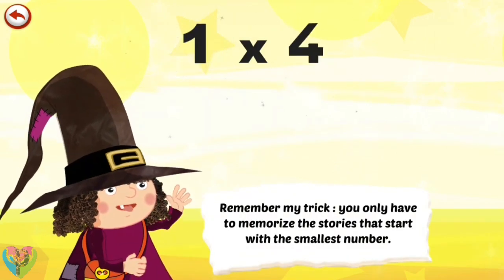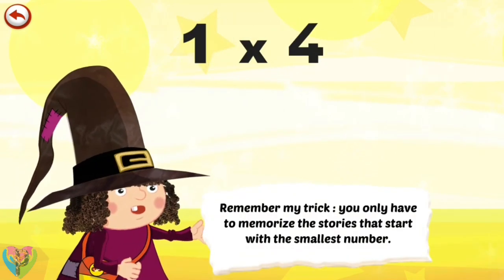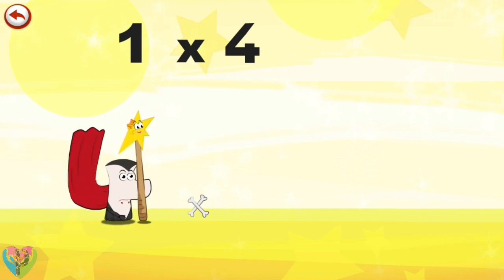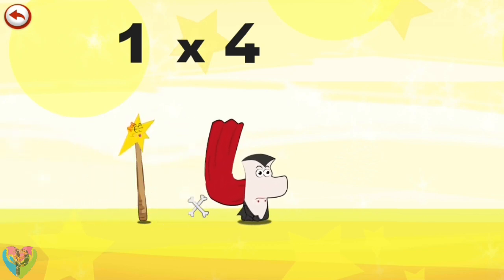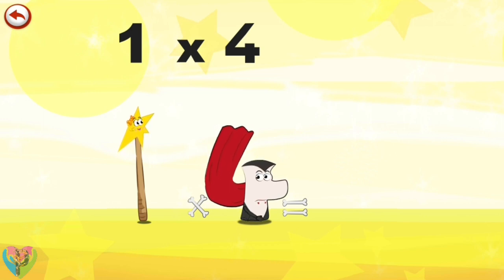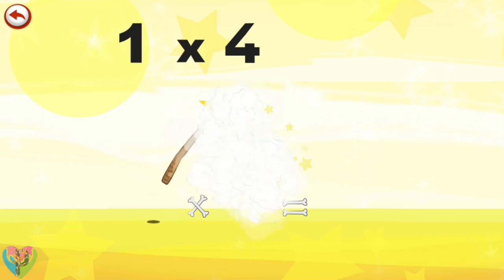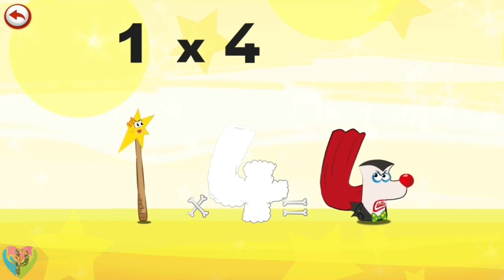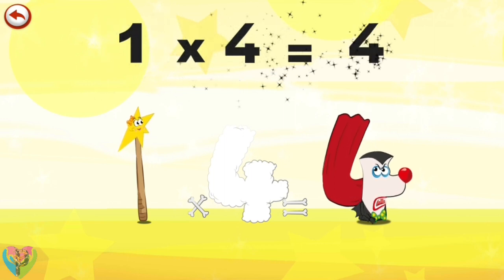Remember my trick, you only have to memorize the stories that start with the smallest number. What's the story of 1 times 4? Mrs. Wonder Wand can't help playing tricks on her friends. When she comes across Mr. Vamp 4, she casts a spell and changes him into Vamp 4 Clown. 1 times 4 is 4.